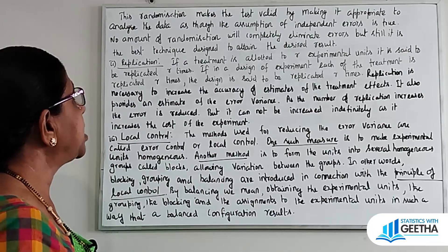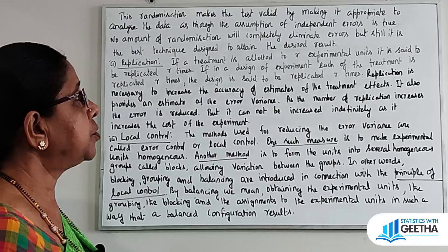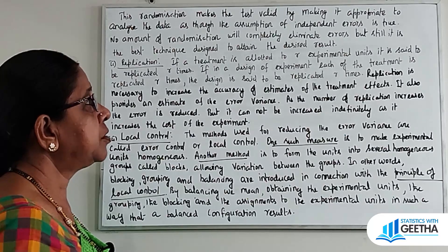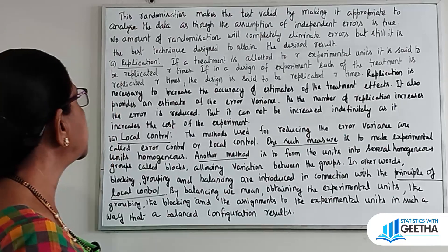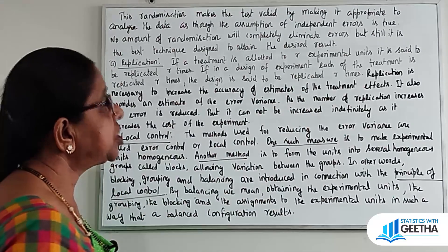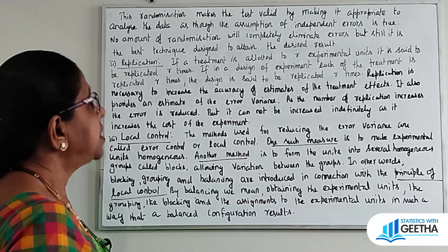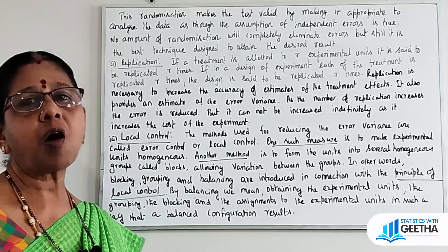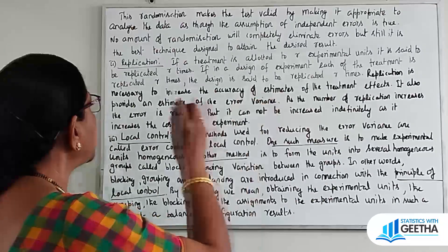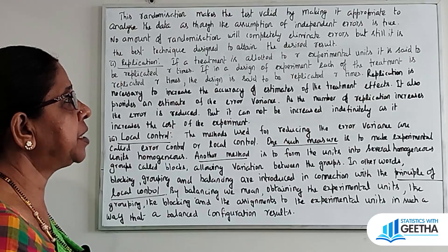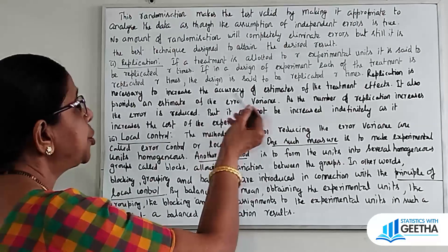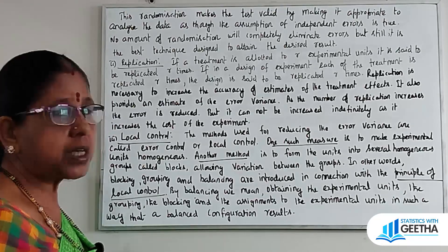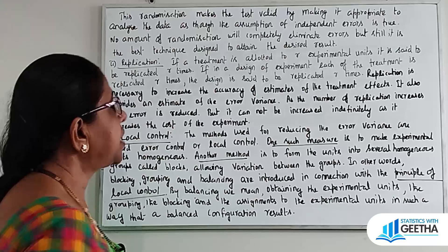The second principle is replication. If a treatment is allotted to all experimental units, it is said to be replicated. If each treatment is replicated in a design of experiment, the design is said to be replicated. Replication is necessary to increase the accuracy of the estimates of the treatment effects. It also provides an estimate of the error variance.